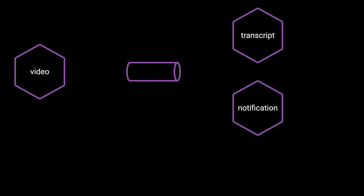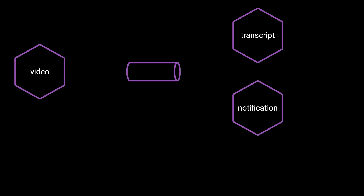These sound ideal, but there are a few challenges to consider. If the video service publishes an event with only the video ID and the video title, the transcript service can know that a video has been uploaded but it needs the audio to start working — so it needs to send a request to the video service to get the audio. The same applies to the notification service, which might need to know who uploaded the video to send an email to the right person. If the event only has minimal information, consumers still need to reach back to the video service for details, reintroducing some coupling.